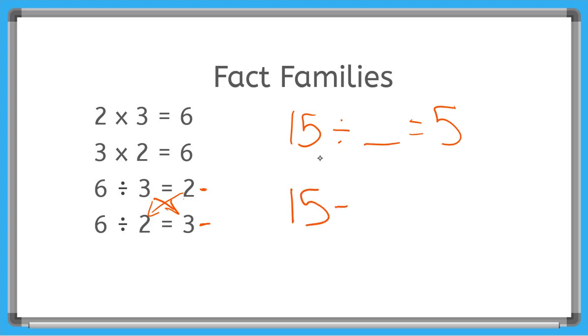5 and the unknown. So 15 ÷ 5 equals the unknown, and if you know your facts, 15 ÷ 5 = 3. So our unknown is 3.